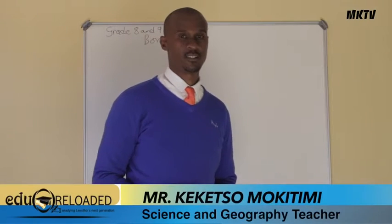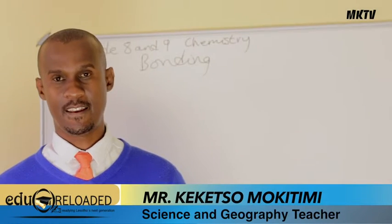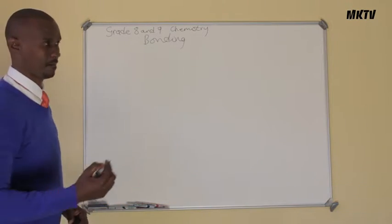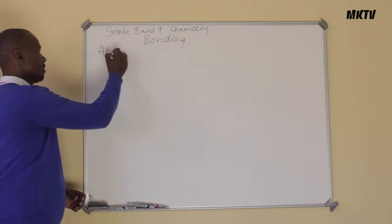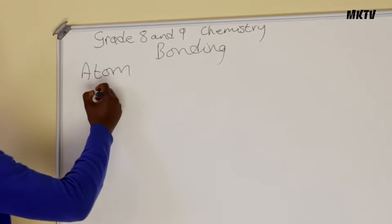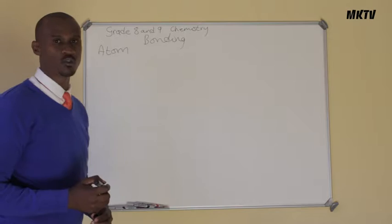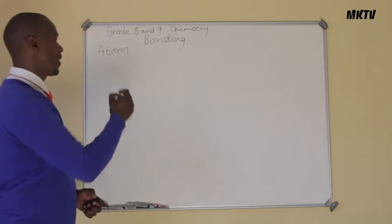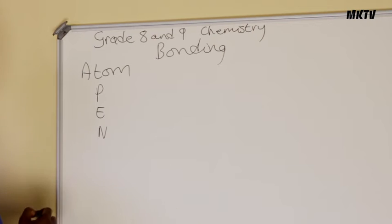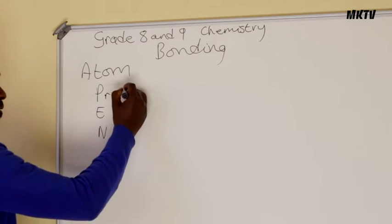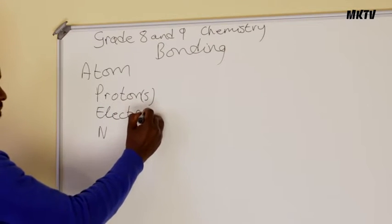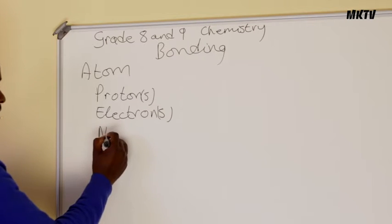We are dealing with the bonding of grade eight and grade nine. To start, we are going to begin with atomic structure. The structure of an atom — we have an atom, and we have to talk about the subatomic structure. We use the acronym PEN, which stands for Protons, Electrons, and Neutrons.